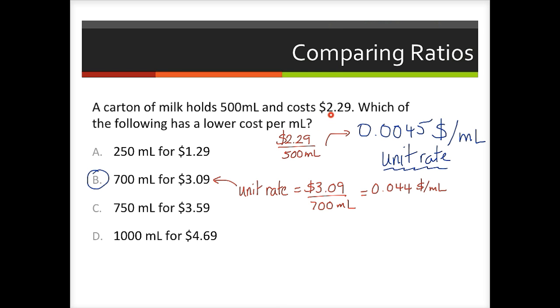So in our example, we're dividing the cost, which is $2.29, by the number of milliliters, which is 500, and it gives us $0.0045 per milliliter. That's the unit rate, or that's one unit rate you can look at. We're looking for one with a lower cost per milliliter, so we want a number that's smaller than 0.0045.